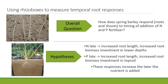The overall question in this experiment is: how does spring barley, our crop model plant, respond to the timing of addition of either nitrogen or phosphorus? We hypothesize that if nitrogen is applied later, we see an increase in root length and root biomass investment at lower depths. On the other hand, if phosphorus is added late, we could also see an increase in root length, but with a higher root biomass investment in the topsoil — and these responses would increase the later the nutrient is added.